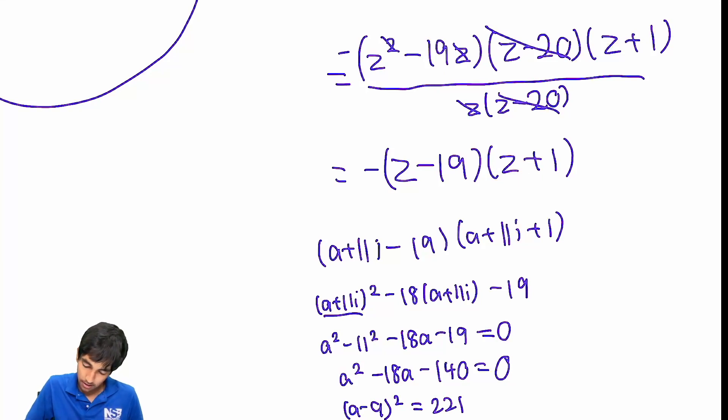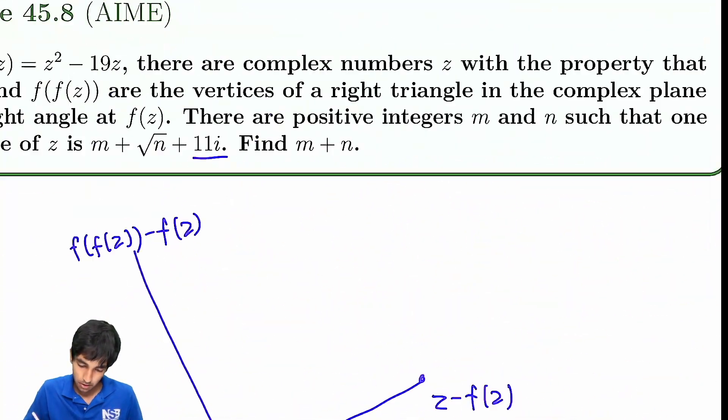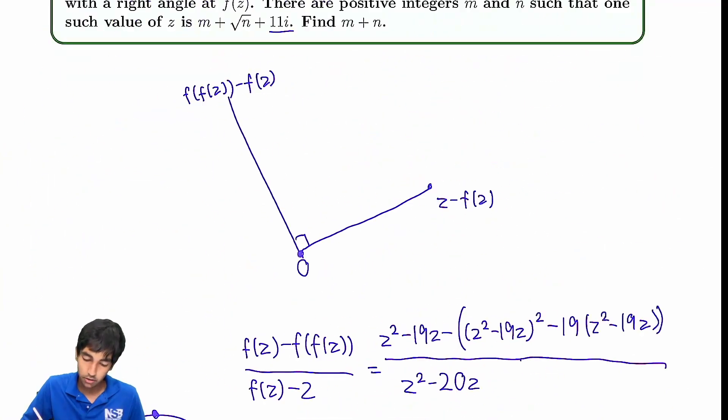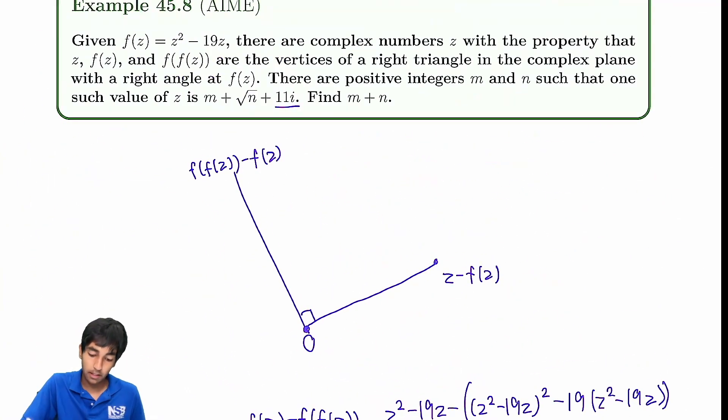So a is 9 plus root 221, or 9 minus root 221, which is negative. Which one is it going to be? Well, it says it's of this form, so plus root n. So it's going to be 9 plus root 221 plus 11i. So our answer is just 9 plus 221, which is 230. A brilliant problem.